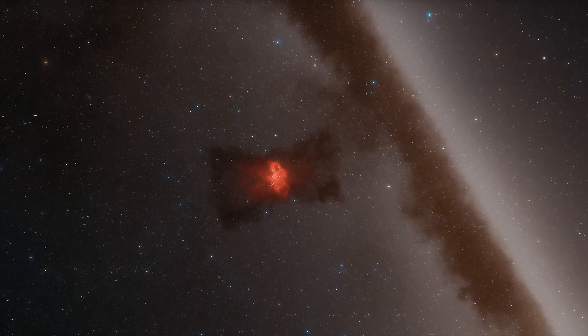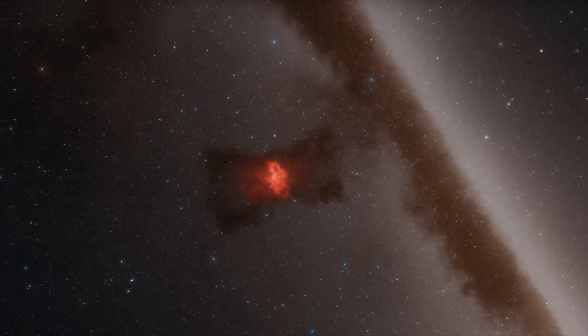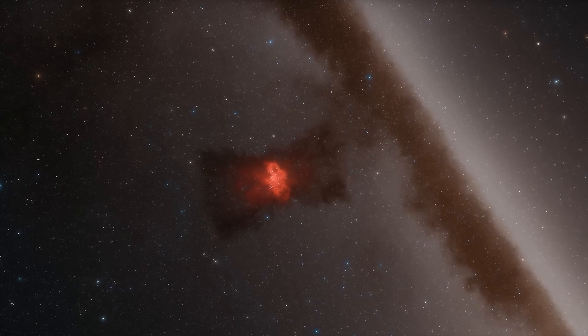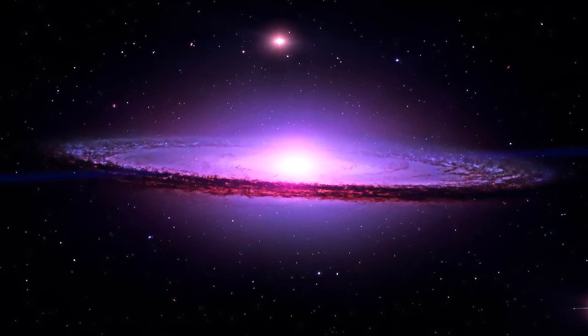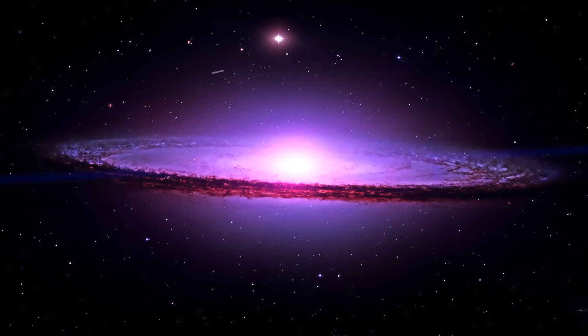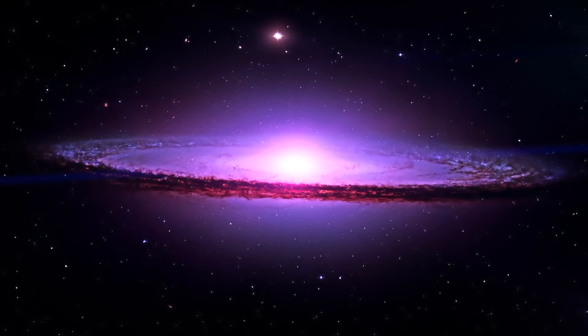Within this model, the galaxies discovered by Webb are therefore impossible. And in addition, our previous theories do not predict nearly as many dark matter halos in the early universe as would have been required for the formation of the large structures.